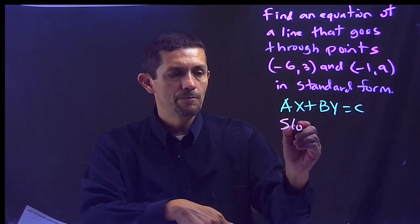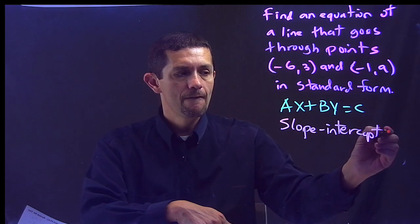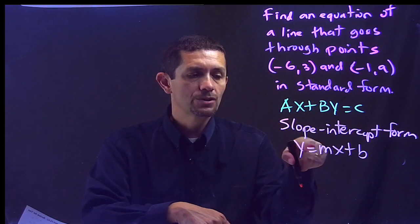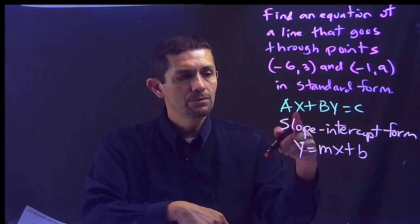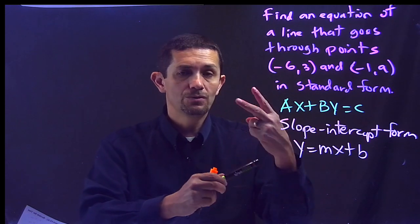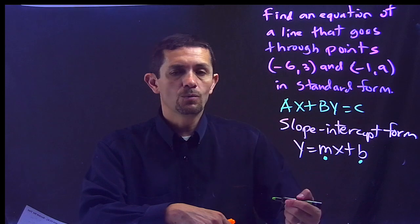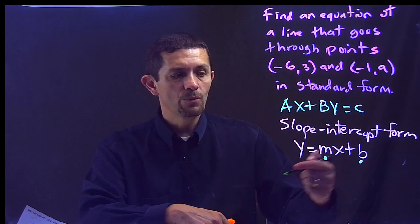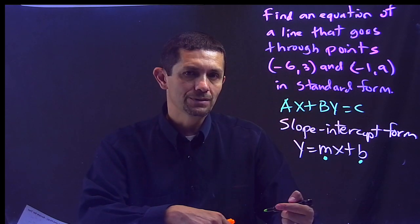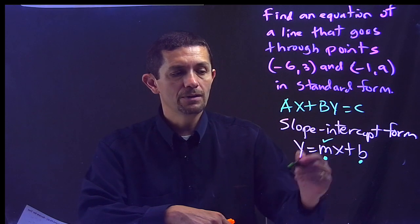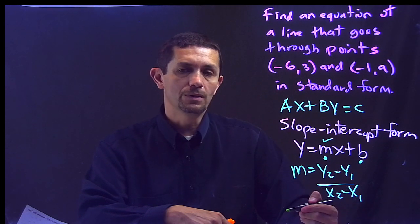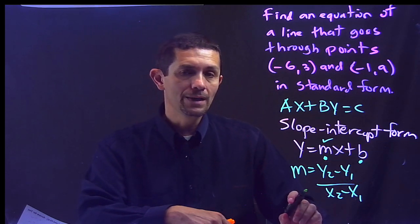So I'm going to go through slope-intercept form, which is y equals mx plus b. I'm going to write my equation in slope-intercept form and then by doing some algebra, get it to standard form. When writing the equation in slope-intercept form, there are two things I need: slope and the y-intercept. Since they only gave me two points, I need to start by finding the slope using the slope formula: y2 minus y1 over x2 minus x1. Once I have my slope, I can find my y-intercept.